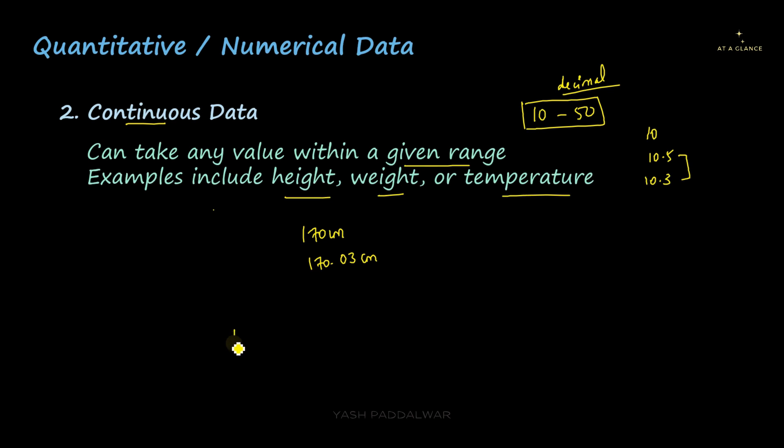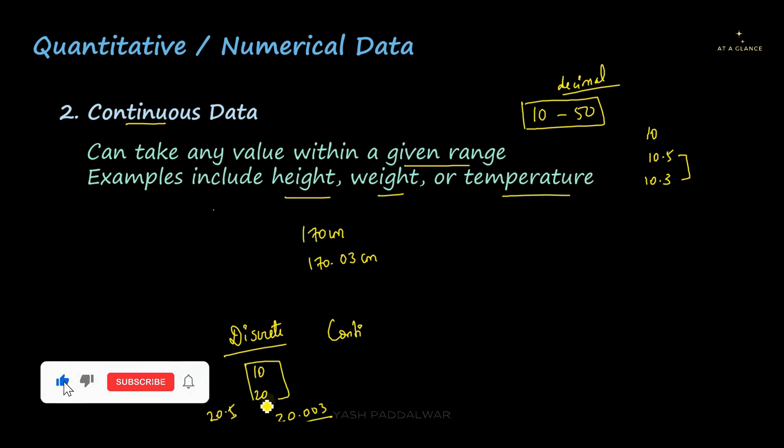I hope you also have understood the difference between discrete type of data and continuous type of data. I already told you, discrete type of data contains distinct values which are whole values. For example, number of students in a particular classroom can be 10, can be 20, but they cannot be 20.5. Obviously, they cannot be 20.003. It has certain restrictions. It can only be a whole number. But when we talk about continuous values, it can have any value specified within a particular range. For example, temperature can be 10 degree Celsius or 10.0312 degree Celsius. That is why it is called continuous. I hope the difference between discrete and continuous is clear to you all.